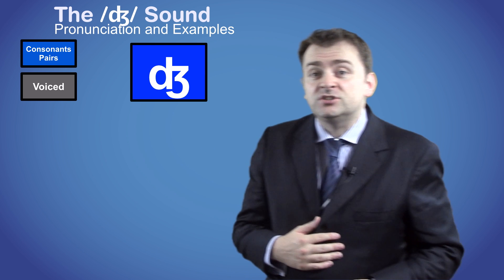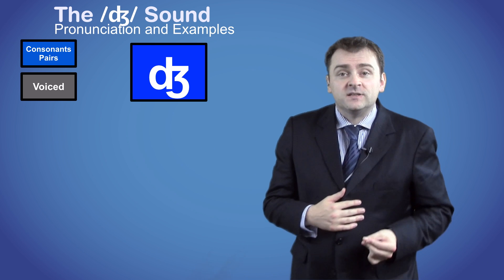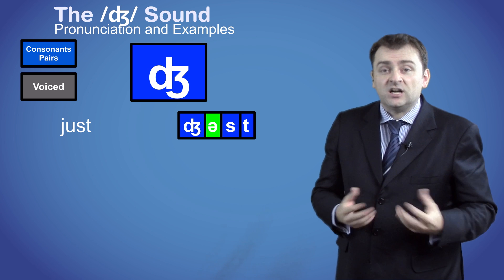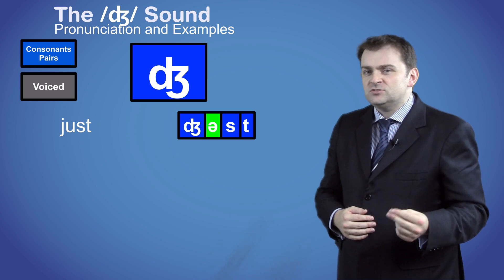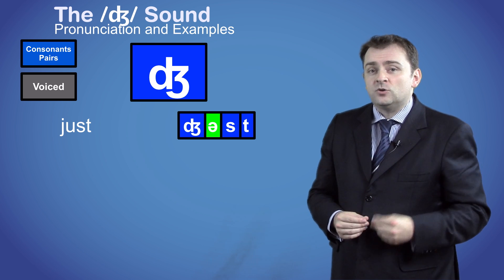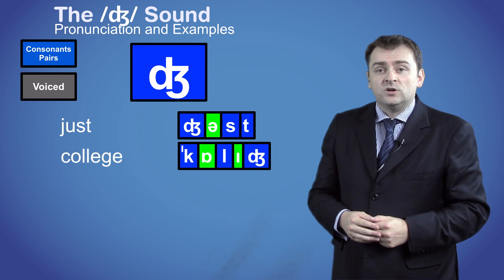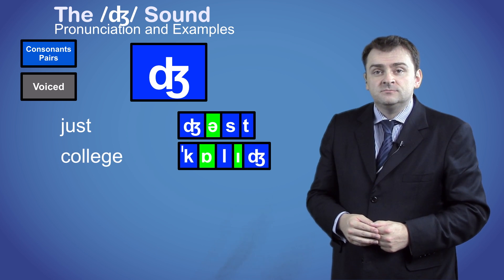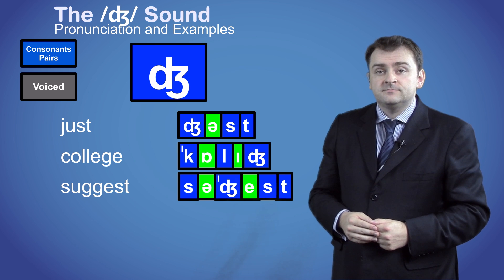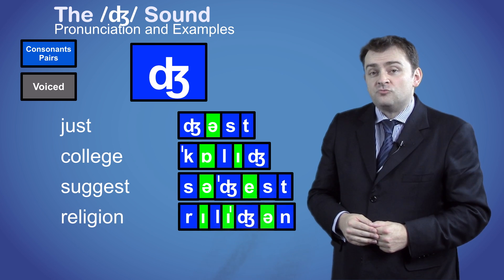The J sound is normally spelled with the letter J, as in the word just. But it can also be spelled with the letters GE or GI, as in the words college, suggest, and religion.